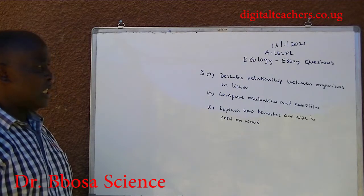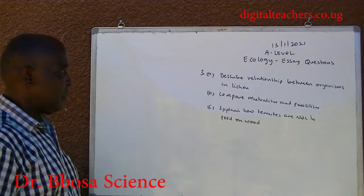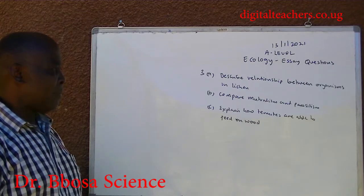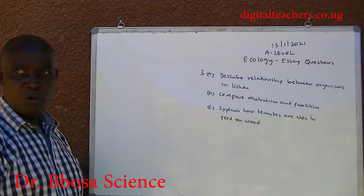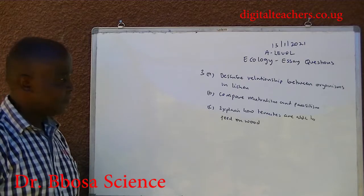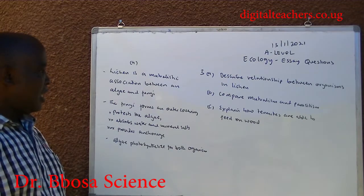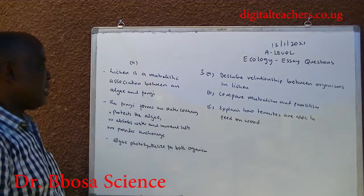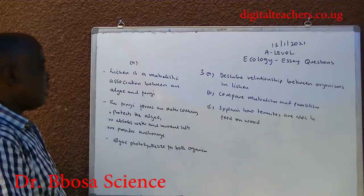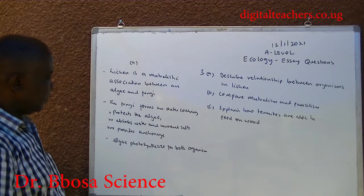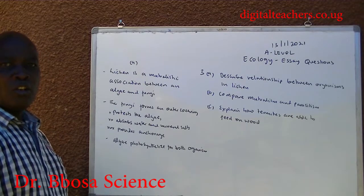Number 3. A: Describe the relationship between organisms in lichen. B: Compare mutualism and parasitism. C: Explain how termites are able to feed on wood. You can pause and answer. A. Lichen is a mutualistic association between an alga and a fungus. The fungus forms the outer covering, protects the alga, absorbs water and mineral salts, and provides anchorage. The alga photosynthesize for both.